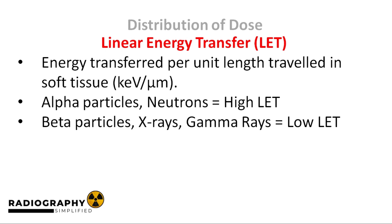High LET radiation is likely to interact directly with biologic tissue. On the other hand, beta particles, x-rays, and gamma rays have little or no mass and act by transferring their energy to electrons to liberate them. These are said to have a low LET, and because they do not have enough energy to directly interact with critical targets, they are most likely to participate in the indirect actions of radiation described in the previous video.